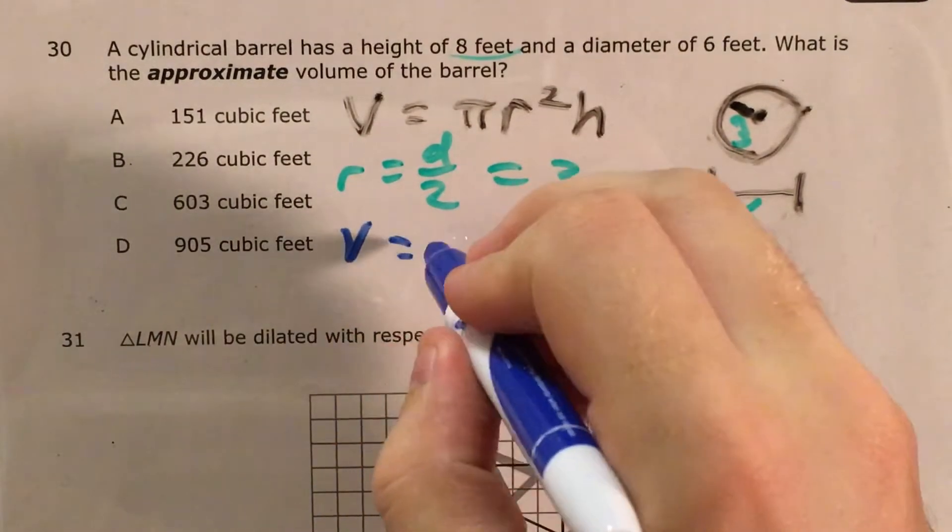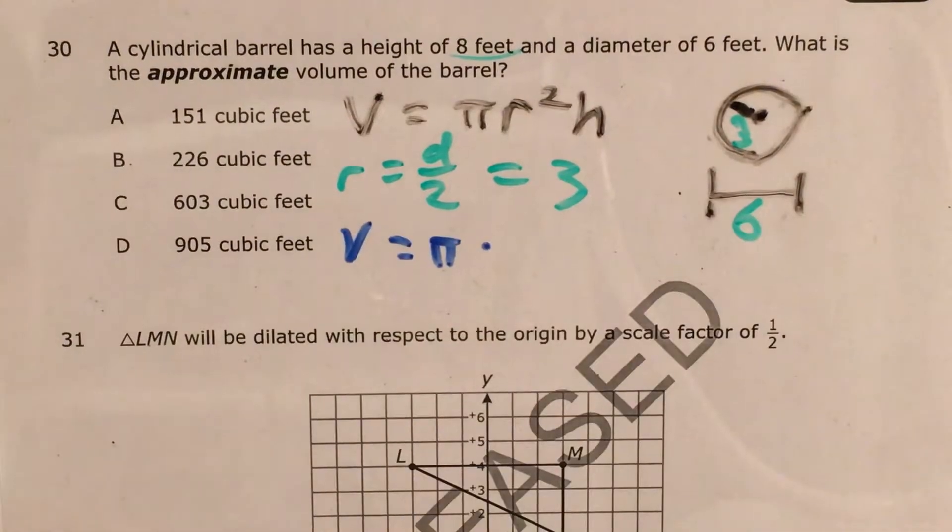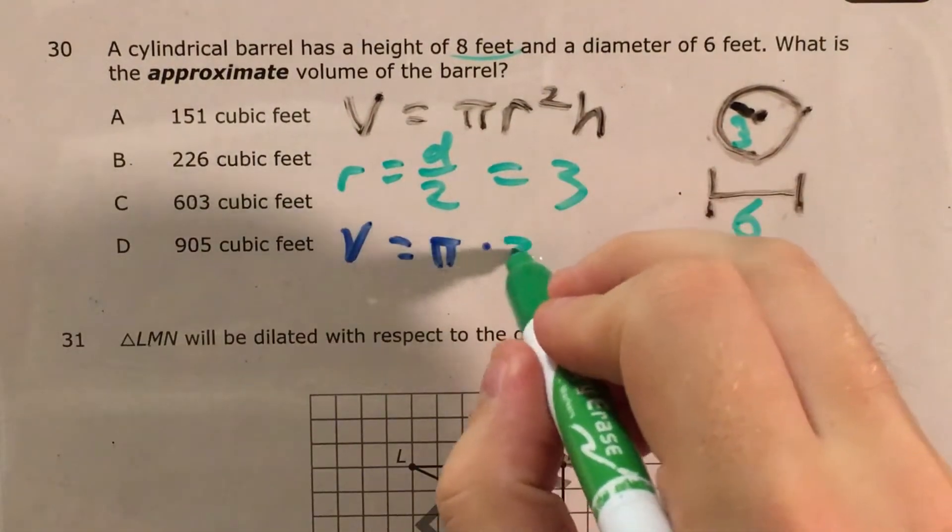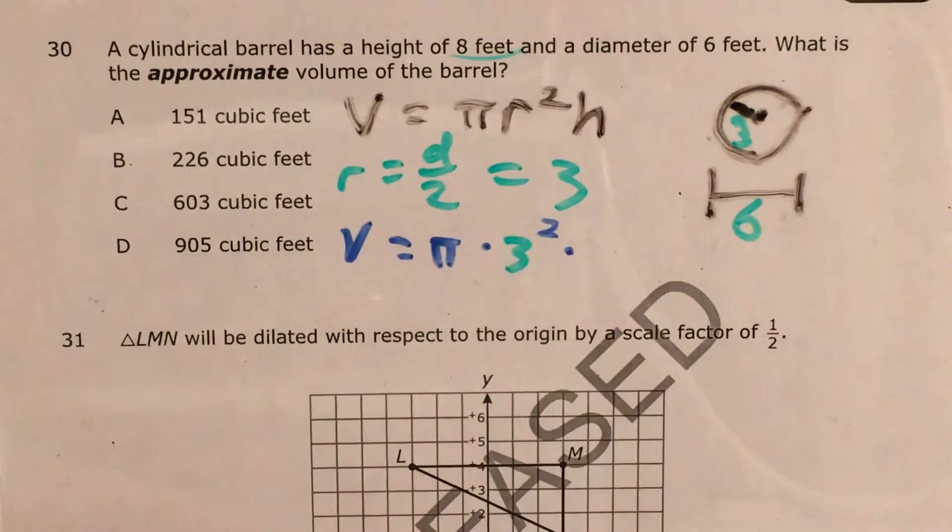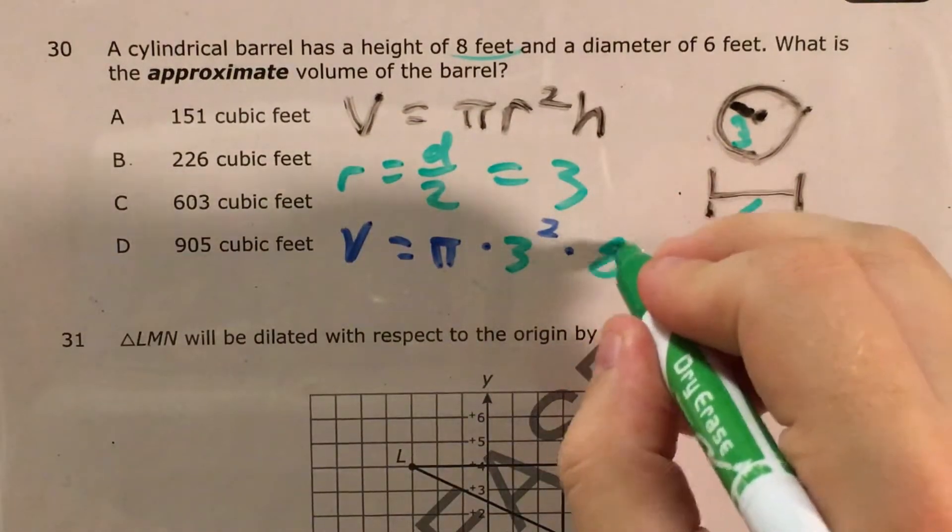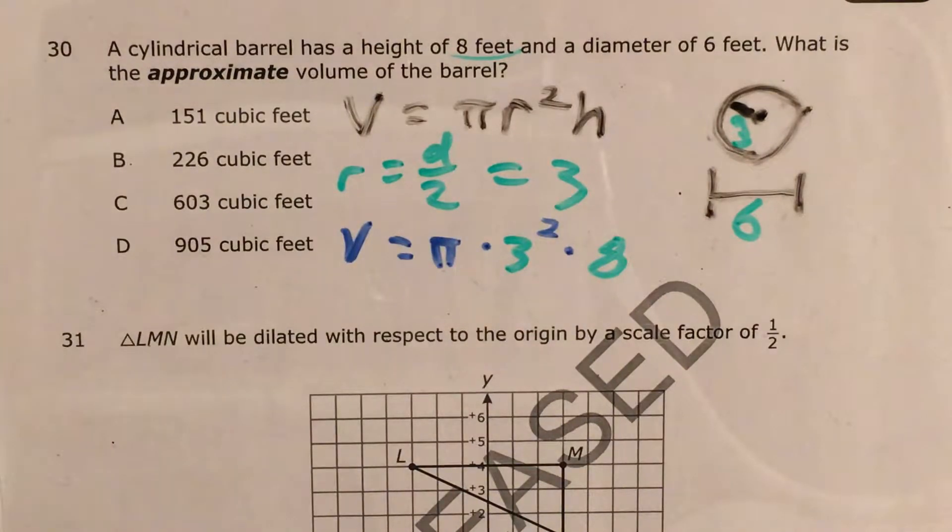So my volume is gonna be pi times r squared, which is 3 squared, times my height, which is 8, and this is now in a form that I can just type in the calculator and solve.